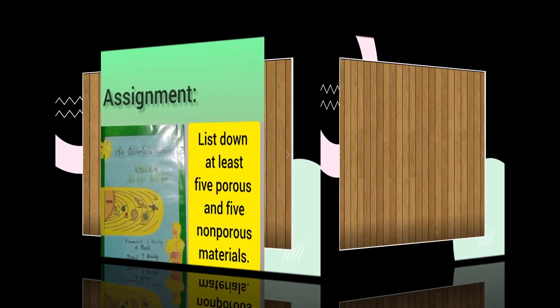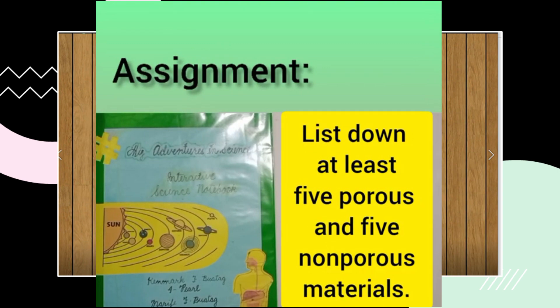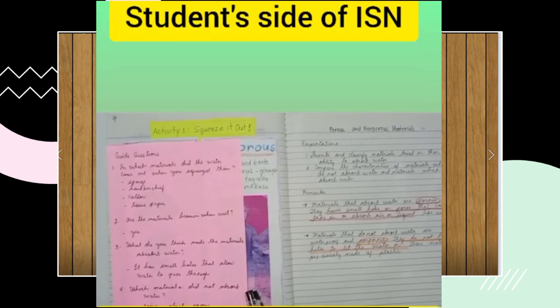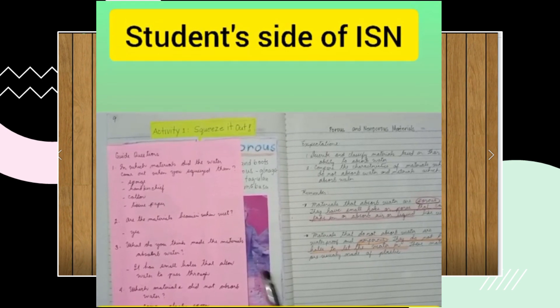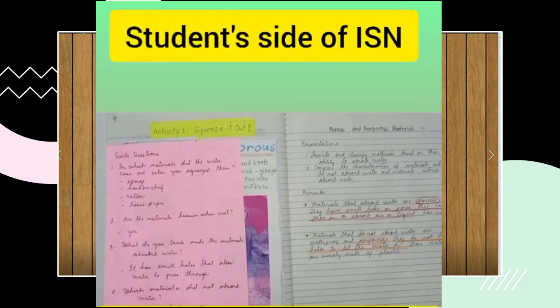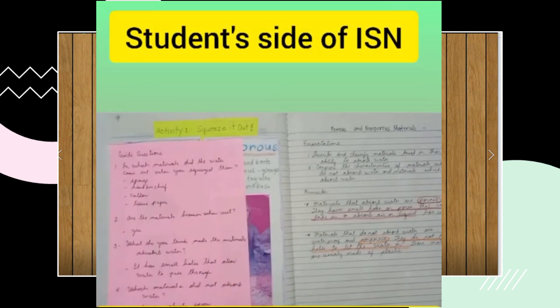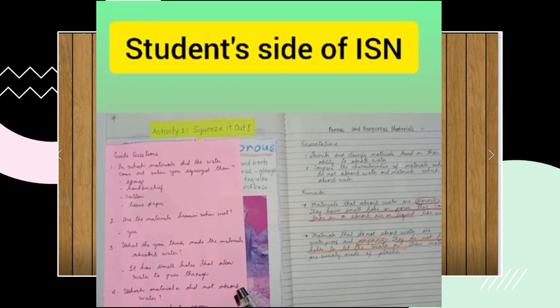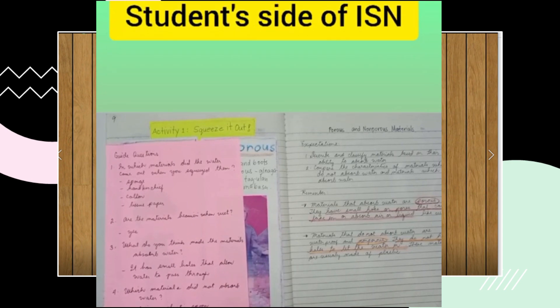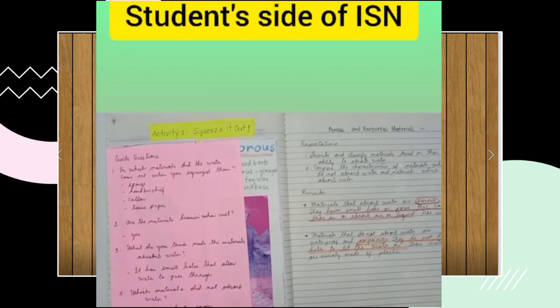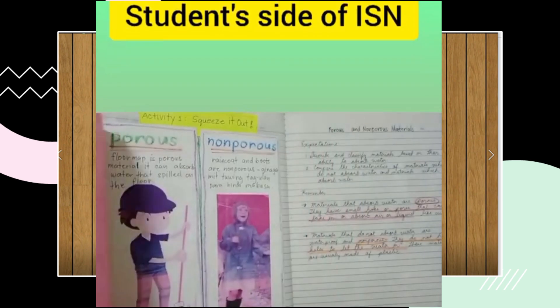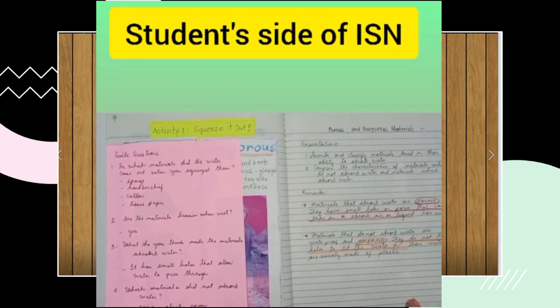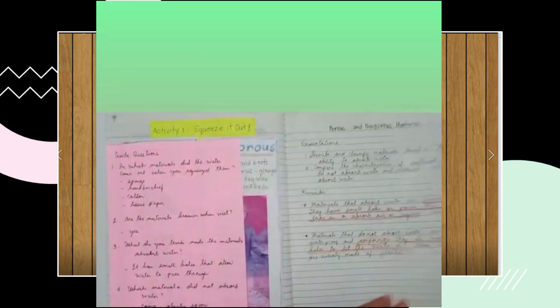For your assignment, list down at least 5 porous and 5 non-porous materials. You can also draw materials that float and sink. This should be reflected on the left side or student side of your ISN. On this page, you may include diagrams, cartoons, drawings, poems, foldables. Let your creativity go wild. If this page is not enough for you, you can glue another sheet of paper to extend it. But you should not use another page.